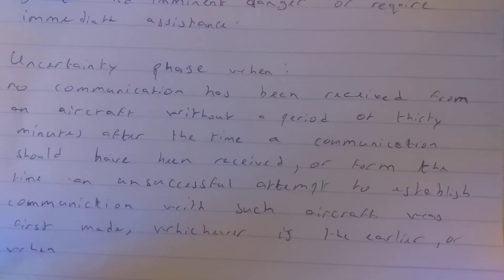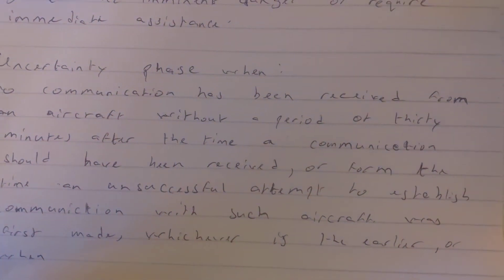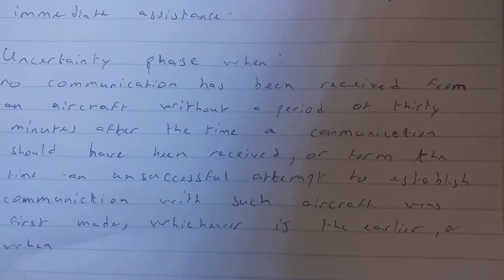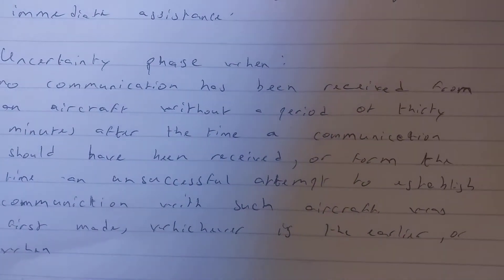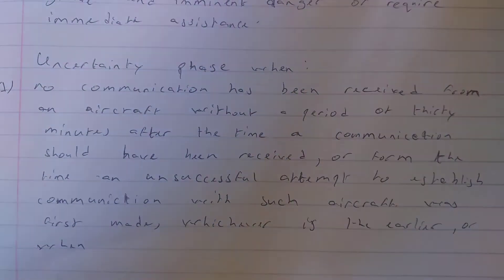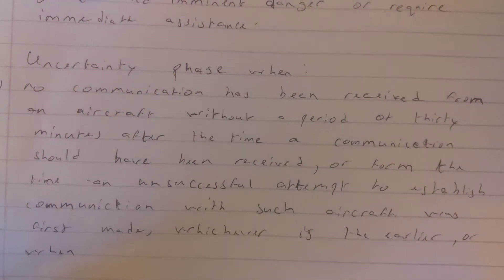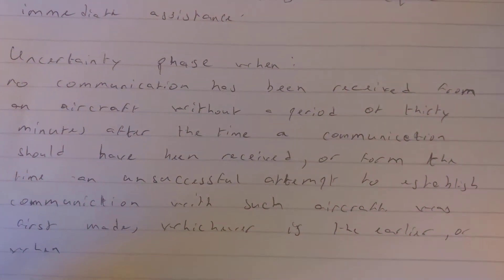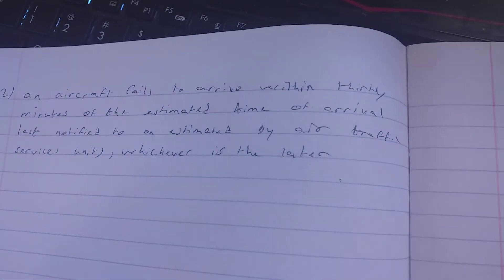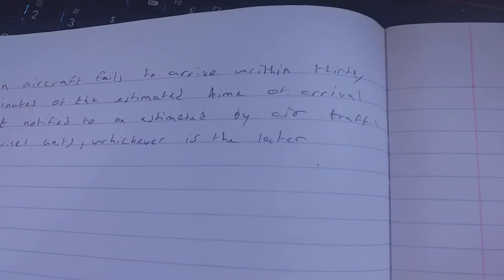This can vary by country — for example, in Mauritius it's 15 minutes to go to the uncertainty phase. The uncertainty phase can also be declared when an unsuccessful attempt to establish communication with the aircraft was first made, whichever is earlier. A second condition is when an aircraft fails to arrive within its estimated time of arrival last notified to the ATS unit.